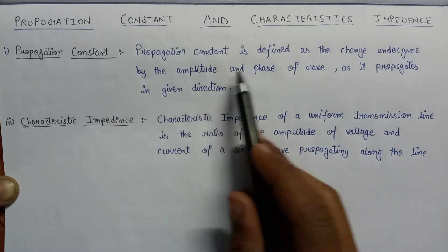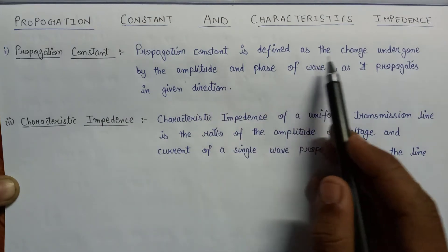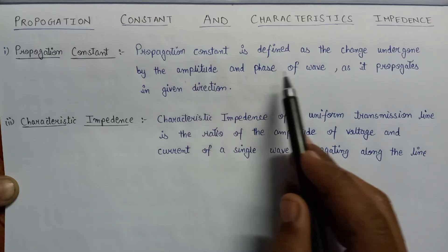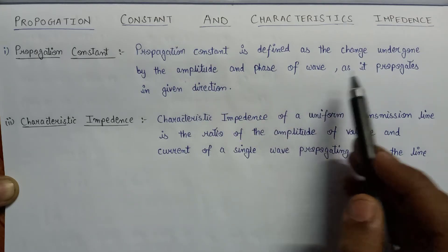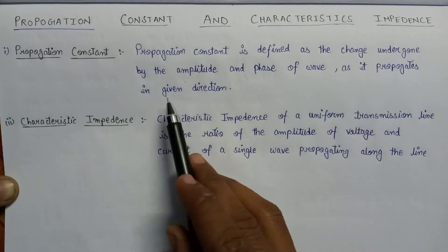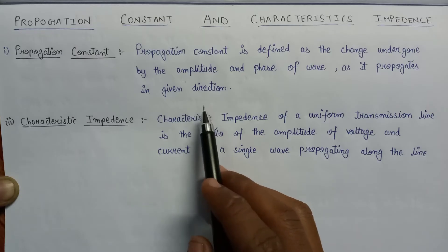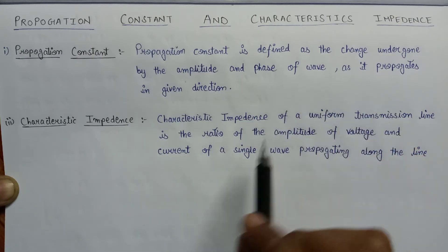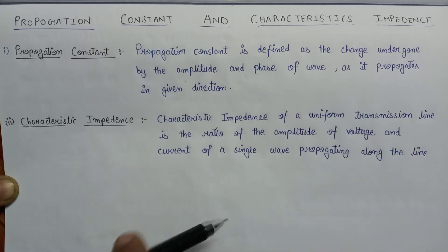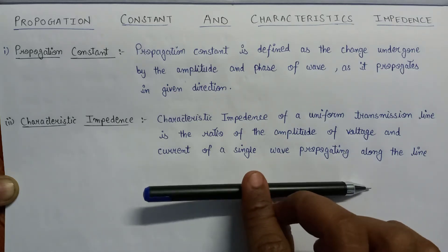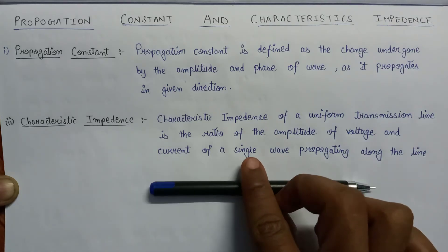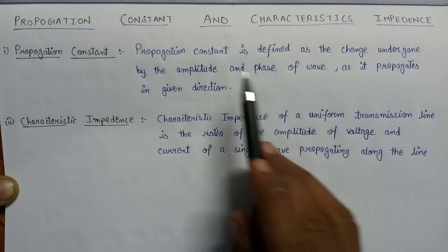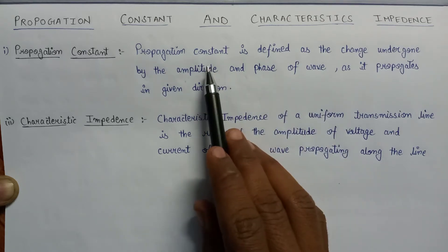A propagation constant is defined as the change undergone by the amplitude and phase of a wave as it propagates in the given direction. That is, if the wave is propagating in a particular direction, then the changes undergone by its amplitude and phase is nothing but the propagation constant.